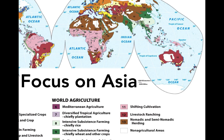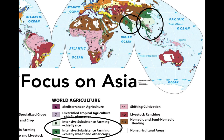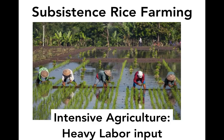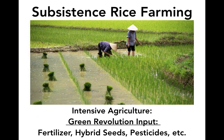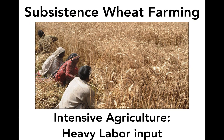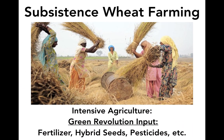Now switching our focus to Asia, we can see that for South Asia as well as Southeast Asia, the most extensive types of land use are intensive subsistence farming — rice, wheat, and other crops. This is a picture of subsistence rice farming in Asia. This is called intensive agriculture because there is a heavy labor input as well as green revolution inputs of fertilizer, hybrid seeds, and pesticides. Similarly, subsistence wheat farming on the Indian subcontinent also shows heavy labor input and green revolution inputs of fertilizer, hybrid seeds, and pesticides. So despite the fact that this is subsistence, there's still a heavy input.